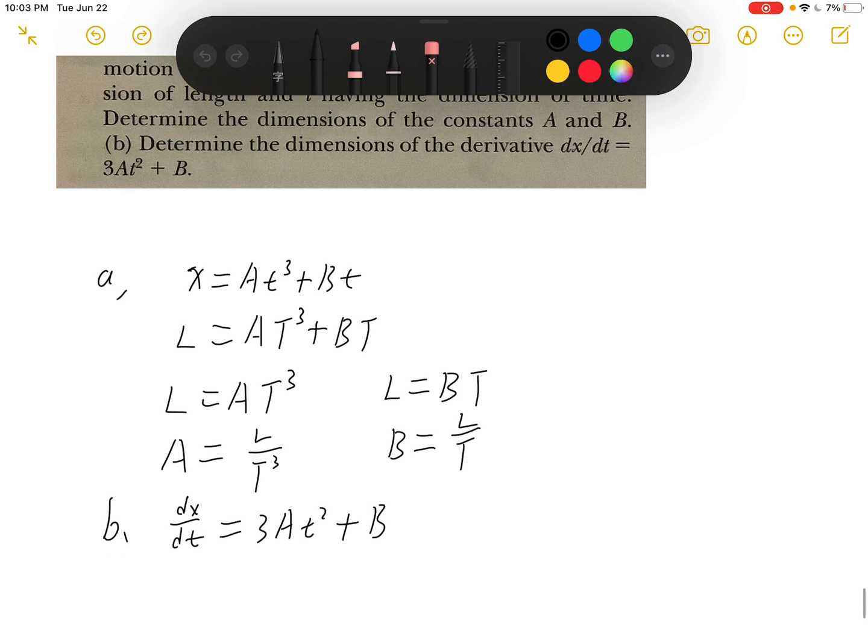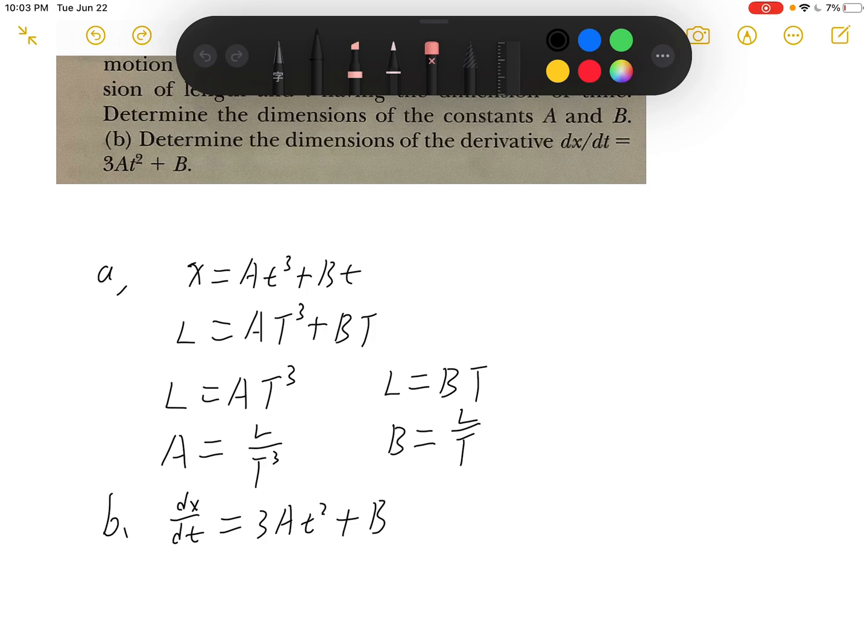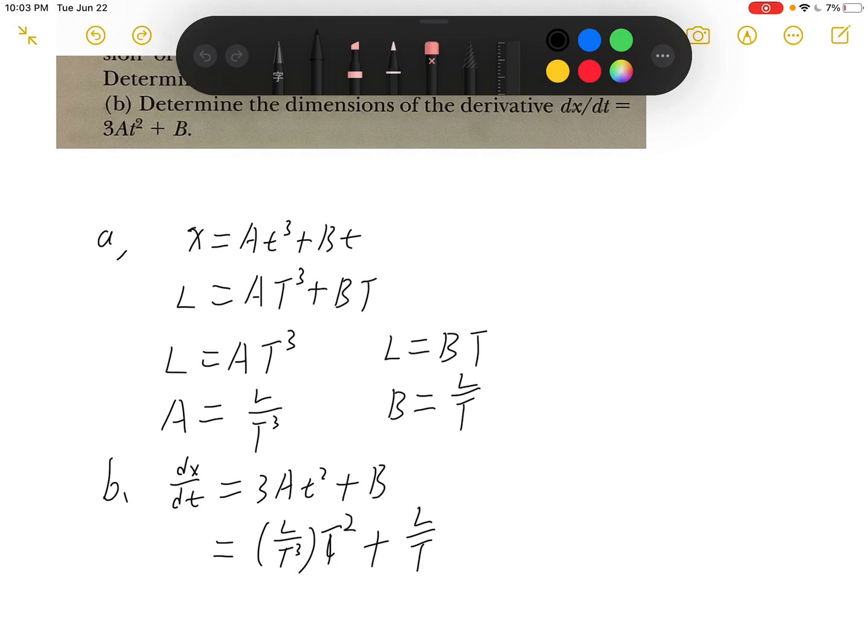So we need to substitute the dimensions for A and B inside. And then we will have L over t cube times t square plus L over t. We can just ignore the 3 because it's a constant.